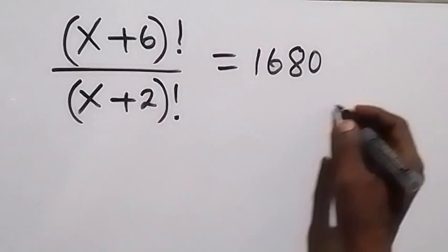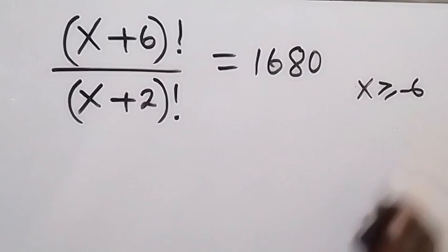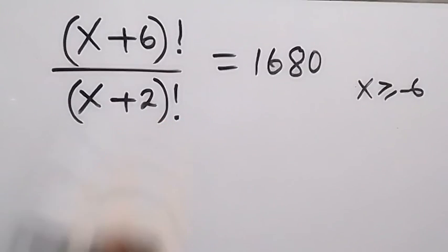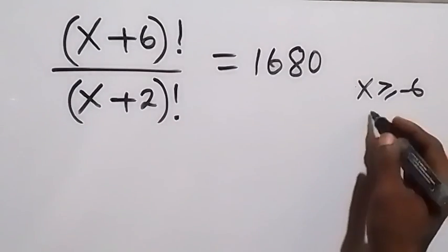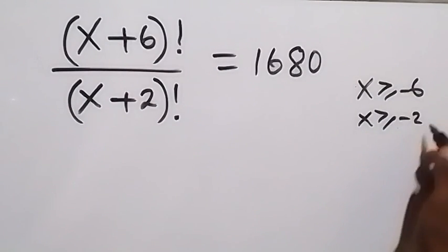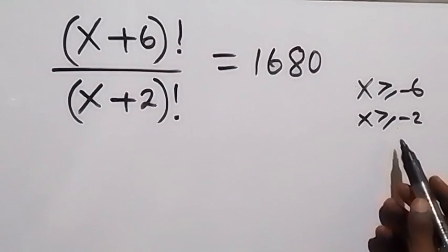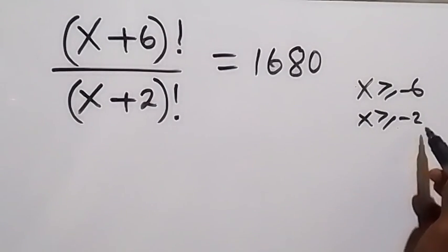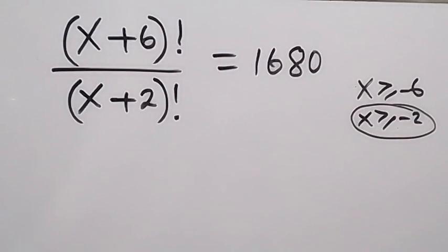It is important to note that the value of x will be greater than or equal to -6, because we cannot have anything less than zero factorial. Also, x will be greater than or equal to -2, and once x is greater than or equal to -2, it is definitely greater than or equal to -6. So this condition is very important.